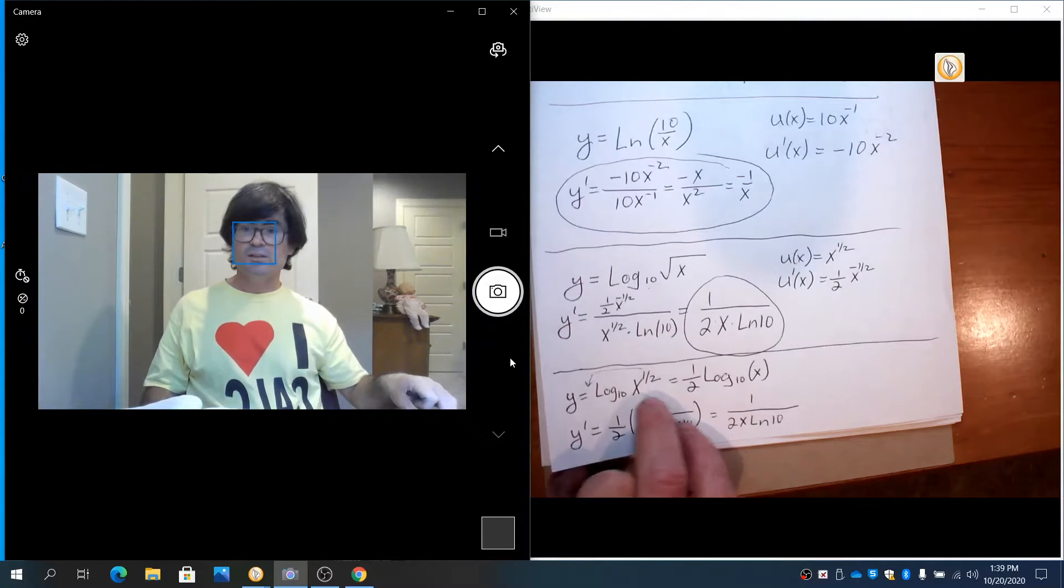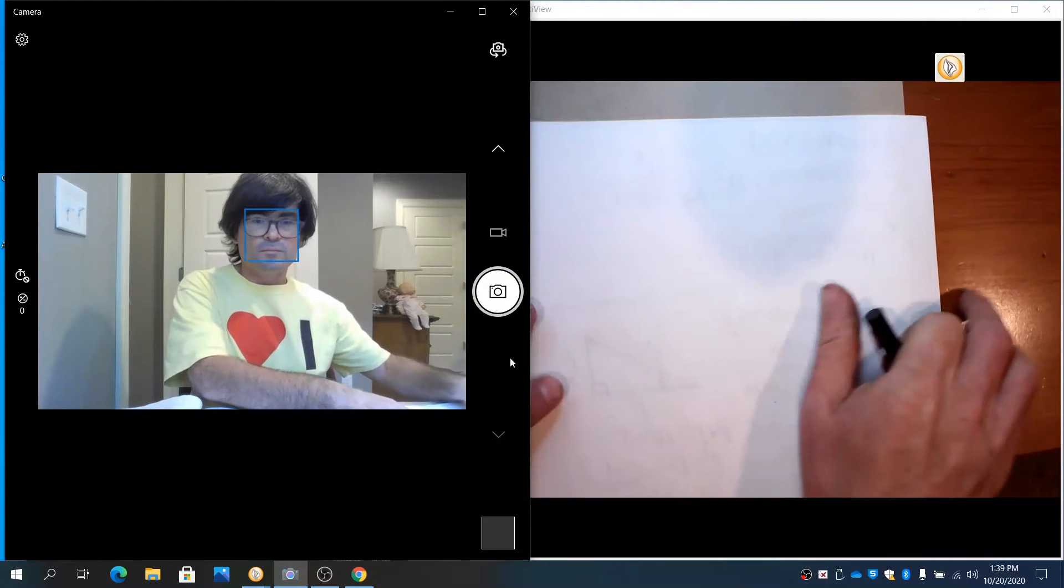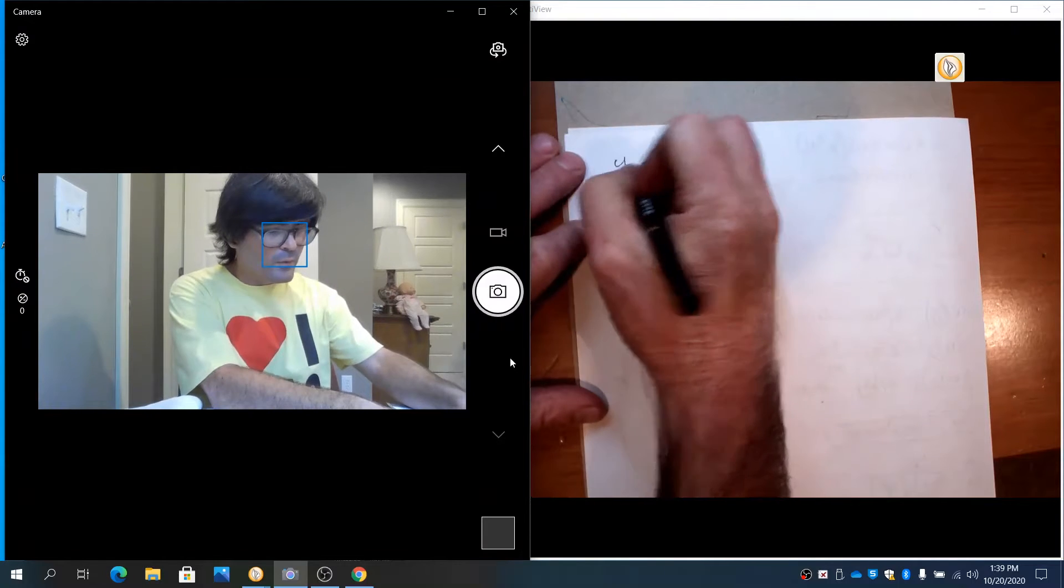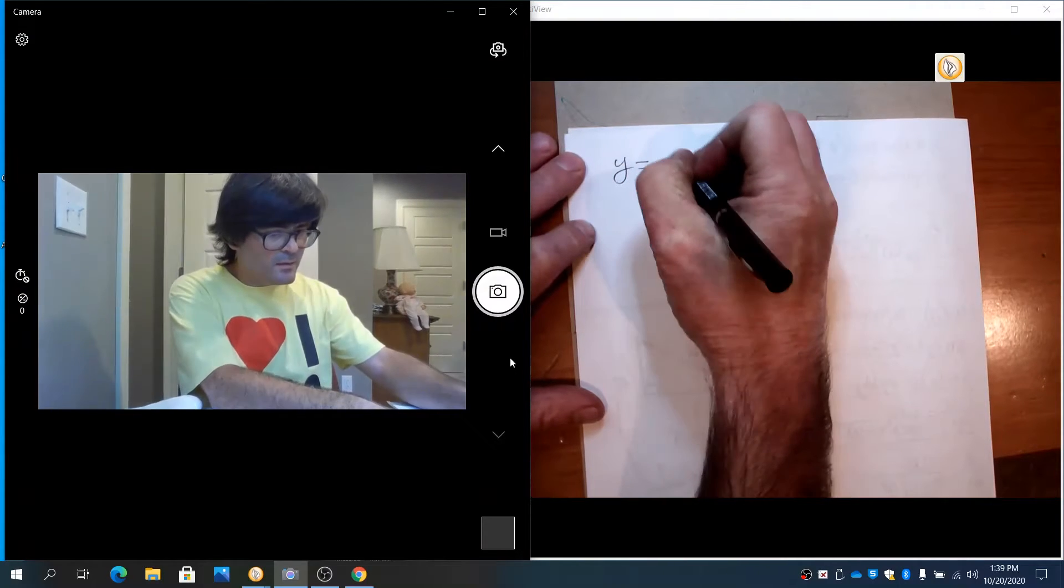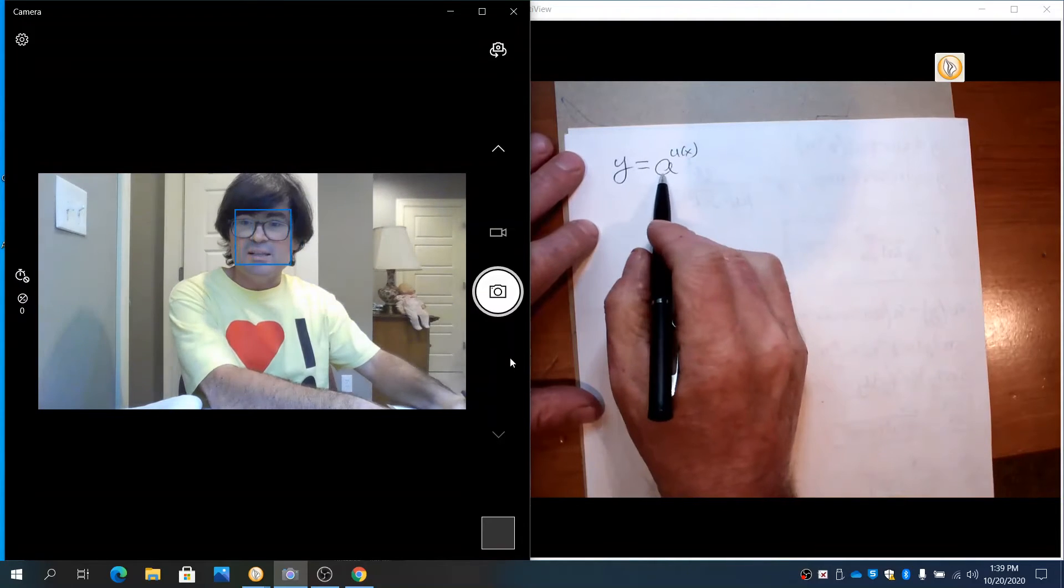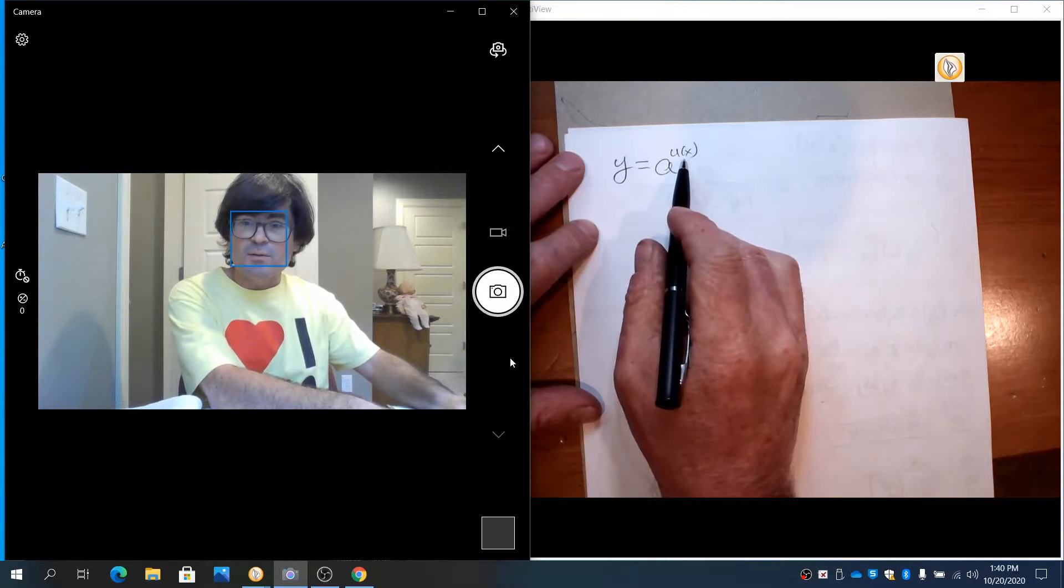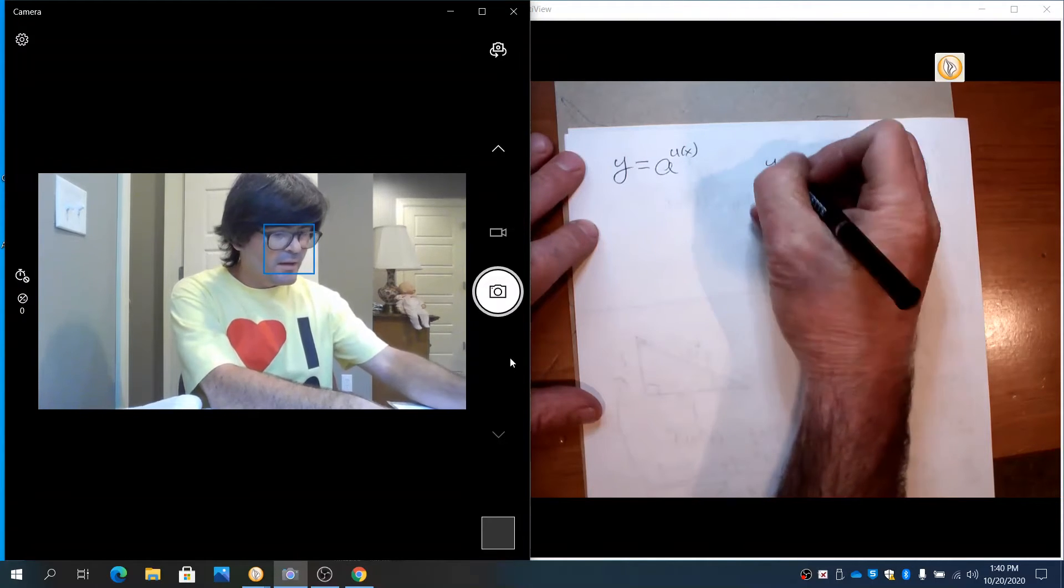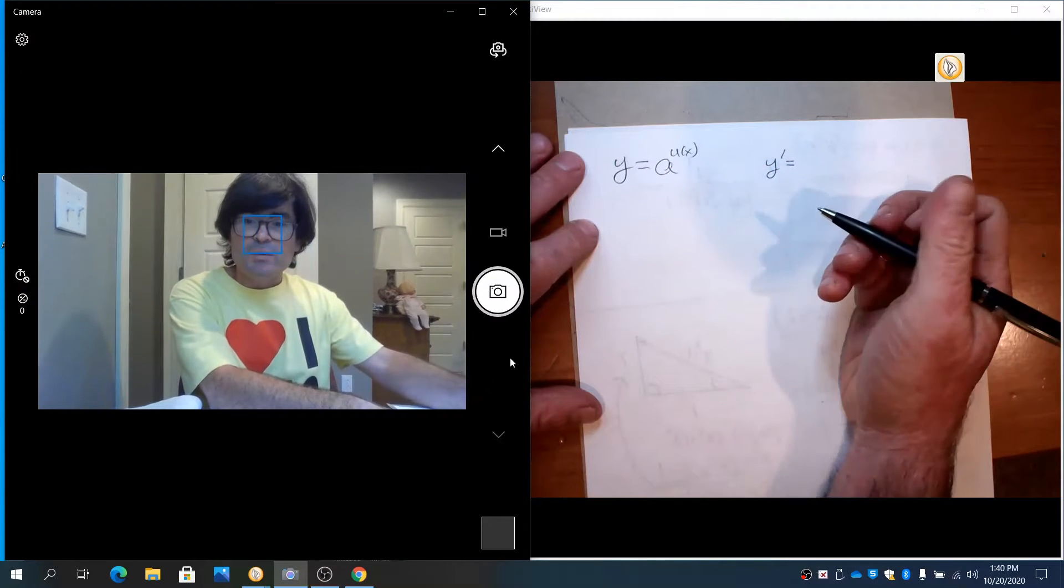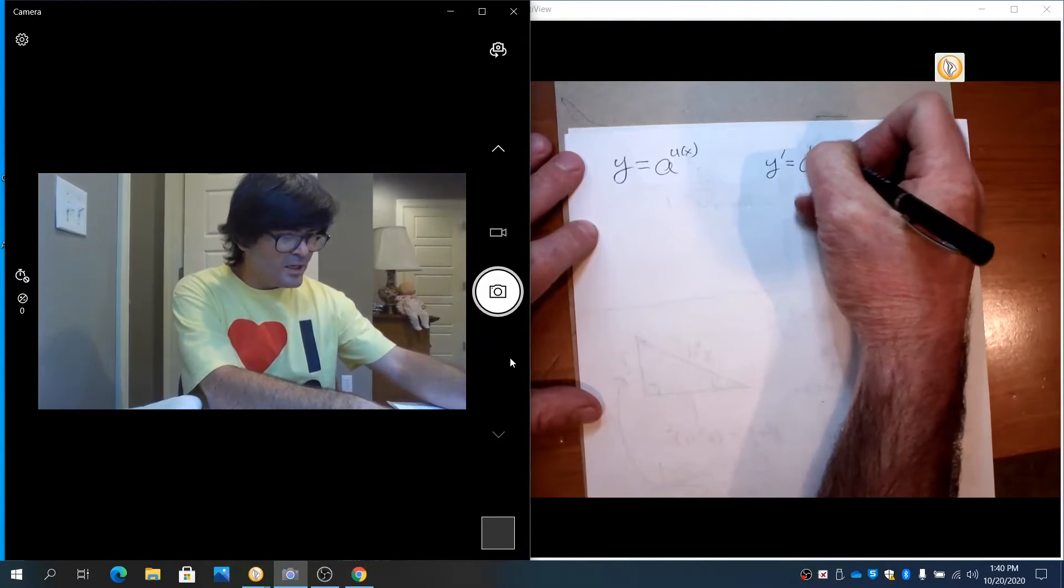Let's move on to the exponential function derivatives. Exponential functions will have derivatives that are also very straightforward. The most basic exponential function is that. Exponential functions have a base that is a number and an exponent that is a function of x. That's what makes an exponential function. That's how we know what an exponential function is. There's three parts here. The first part is you recopy the original unchanged.